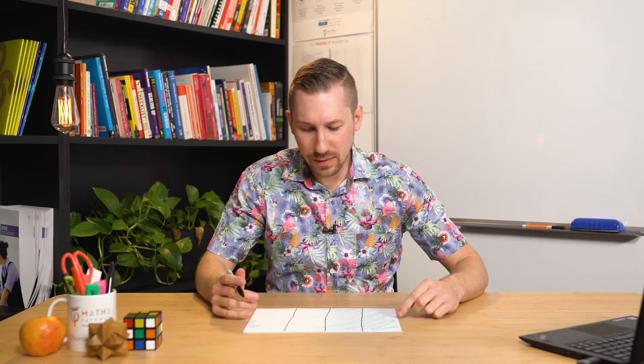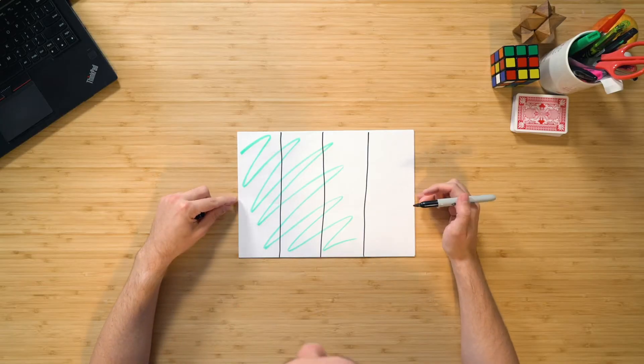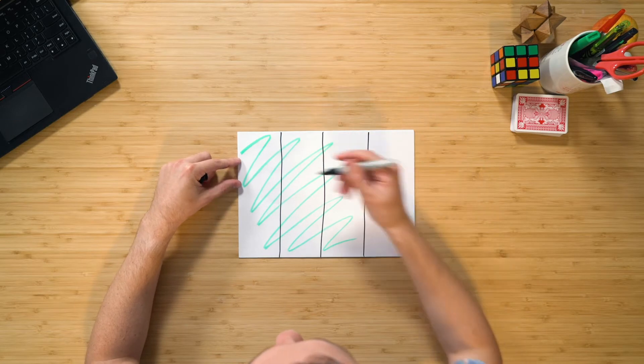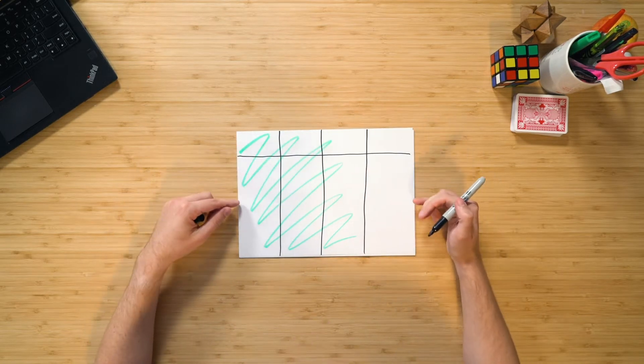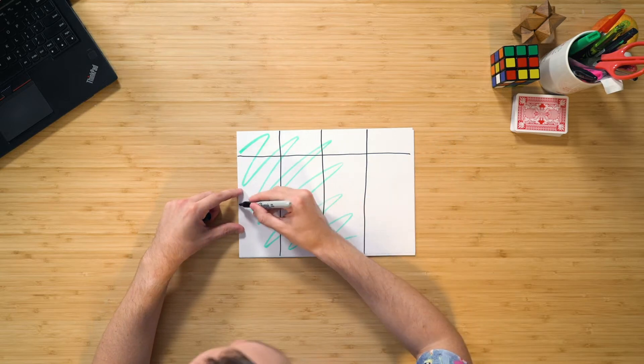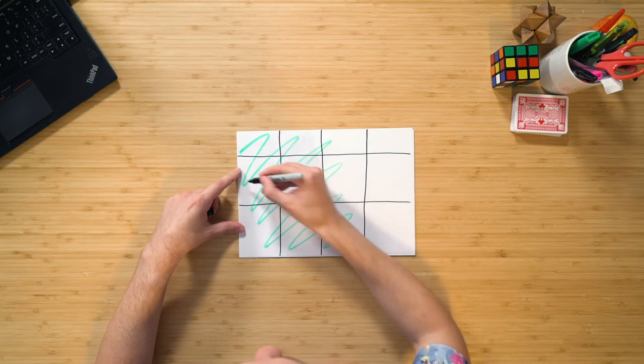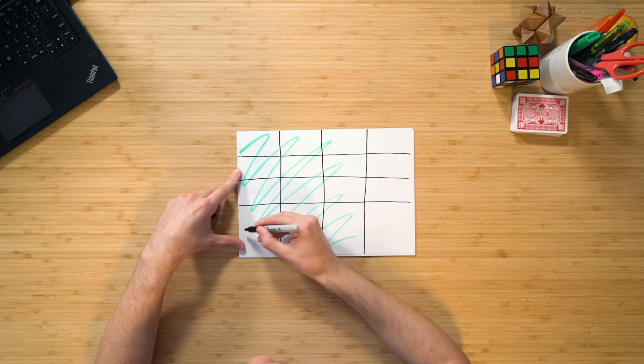Now, I need to find two fifths of those three quarters. And if you remember back to the previous video, to find this, we go half, half again, and a little bit less. So therefore, it's going to be roughly here. And then I simply break up what's remaining into the quarters. So I'm going to go half of that and then break that into halves as well.